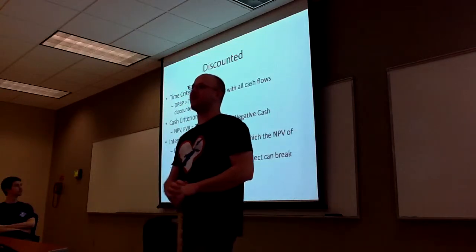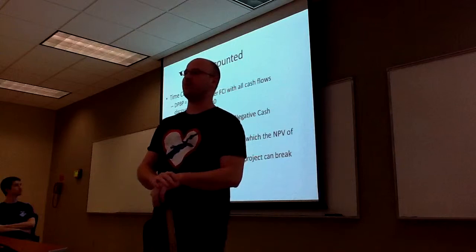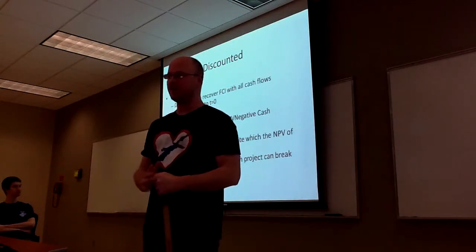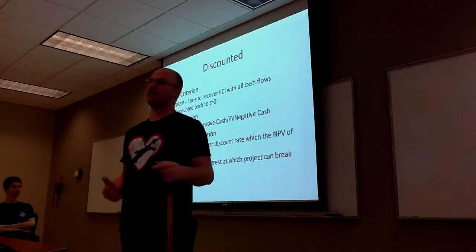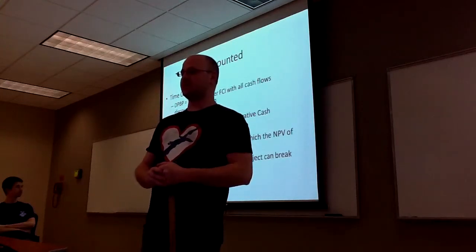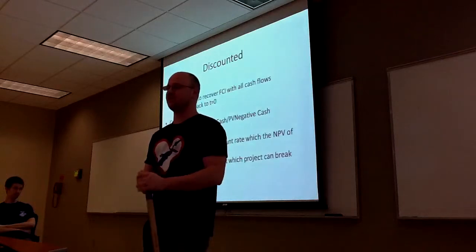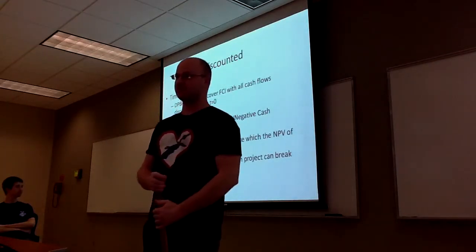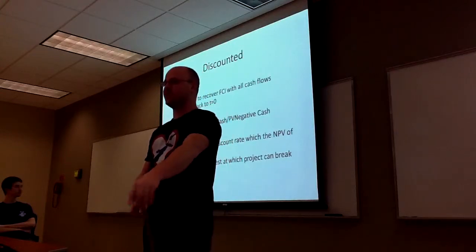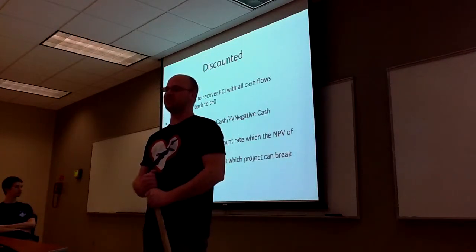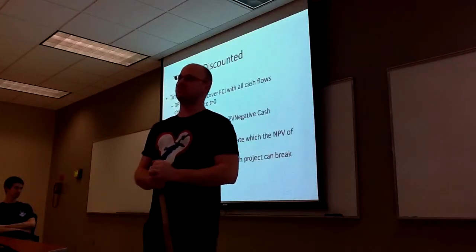For the discounted method, it assumes all your cash values flow back to a current value — so instead of worrying about future values, you put everything in current value. Your time criteria is the time to recover your fixed capital, with all cash flows discounted back to initial time. Your cash criteria is based on net present value and the present value ratio, which is present value of positive cash flows divided by present value of negative cash flows. Your interest rate criterion is based on the discounted cash flow rate of return, which is the interest rate at which the net present value of the project is zero — basically your highest after-tax interest at which the project can break even.